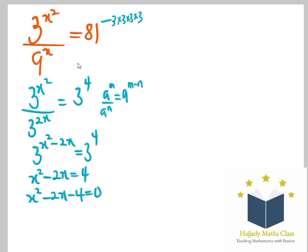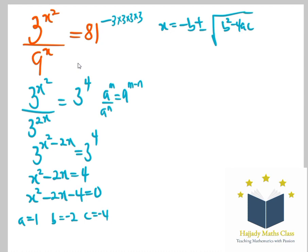In order to solve this quadratic equation, we are going to use the quadratic formula approach, where the coefficient a equals 1, b equals negative 2, and c equals negative 4. Using the formula, x equals minus b plus or minus root of b squared minus 4ac, all over 2a.